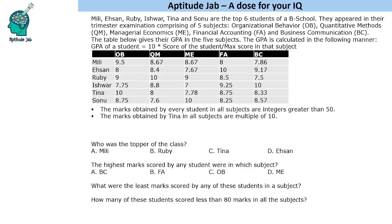Welcome to Aptitude Jab. This is a set involving a data table. There are six students — among the top six in their college — who appeared in a trimester examination which had five subjects. The names of the subjects are mentioned here.